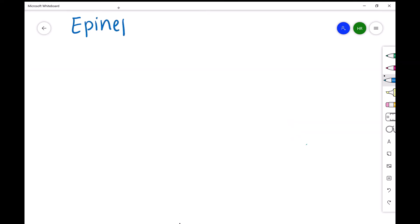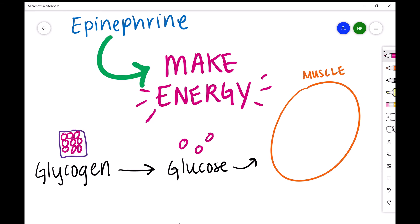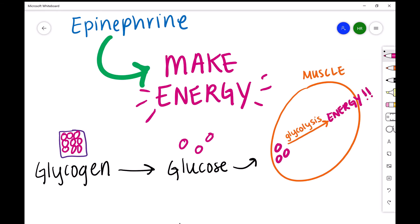The response that epinephrine creates is to mobilize energy, and this is done by breaking down glycogen into glucose. By releasing glucose, we can use this in our muscles to undergo glycolysis to create energy for us to literally run away.